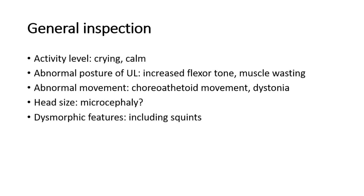In the short case of cerebral palsy, which is one of the common cases for neurology in pediatric posting, first we do general inspection of the child. We look at their activity level and comment whether they are crying or they look alert and calm. Any abnormal posture of the upper limb, such as increased flexor tone or muscle wasting. Abnormal movement, such as choreoathetoid movement or dystonia. We note the head size because this is a neurological examination, and an expected finding would be microcephaly. Look for dysmorphic features, including any squinting of the eyes.